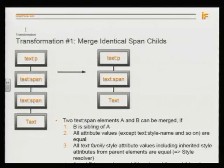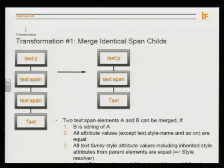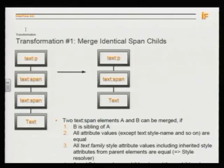Here is one example. You have text spans inside text spans. If you look at the attribute values, essentially they have the same values — so there is no difference in formatting. It's just an XML difference with no visible difference in LibreOffice; you cannot see a difference. So you can merge these two text spans together. This is one possible solution.